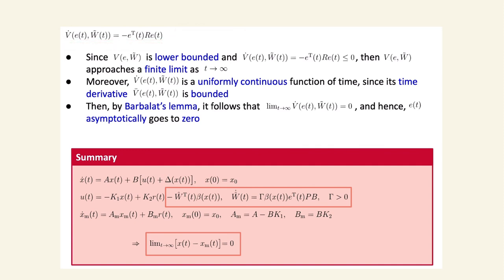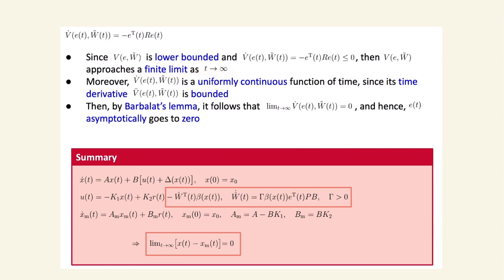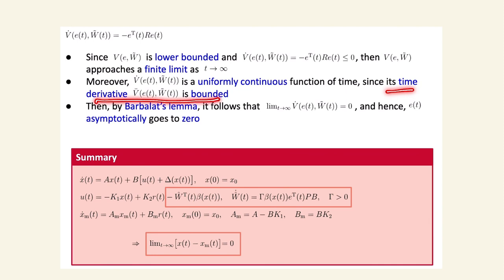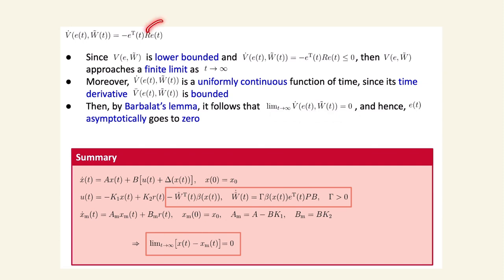Three important remarks follow. Since the Lyapunov function is lower bounded and V_dot ≤ 0, V approaches a finite limit as t → ∞. Moreover, V_dot is uniformly continuous and bounded. By Barbalat's lemma, V_dot → 0, and since R is positive definite, the error e → 0 asymptotically — meaning the uncertain system's state x converges to the desired reference model behavior x_m.